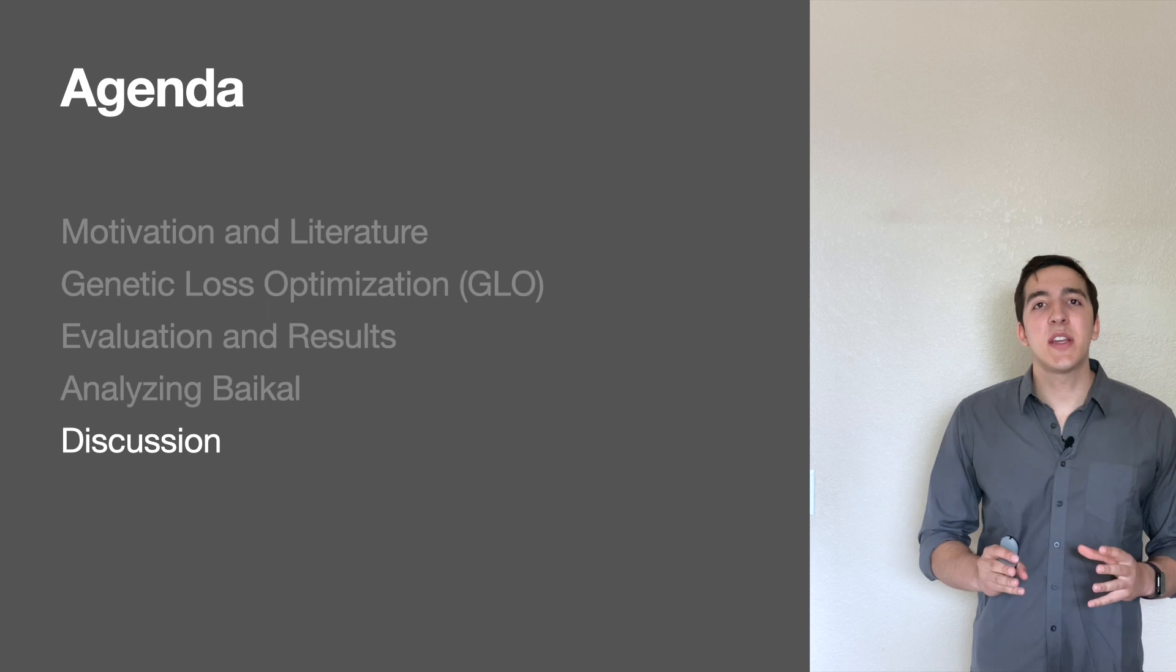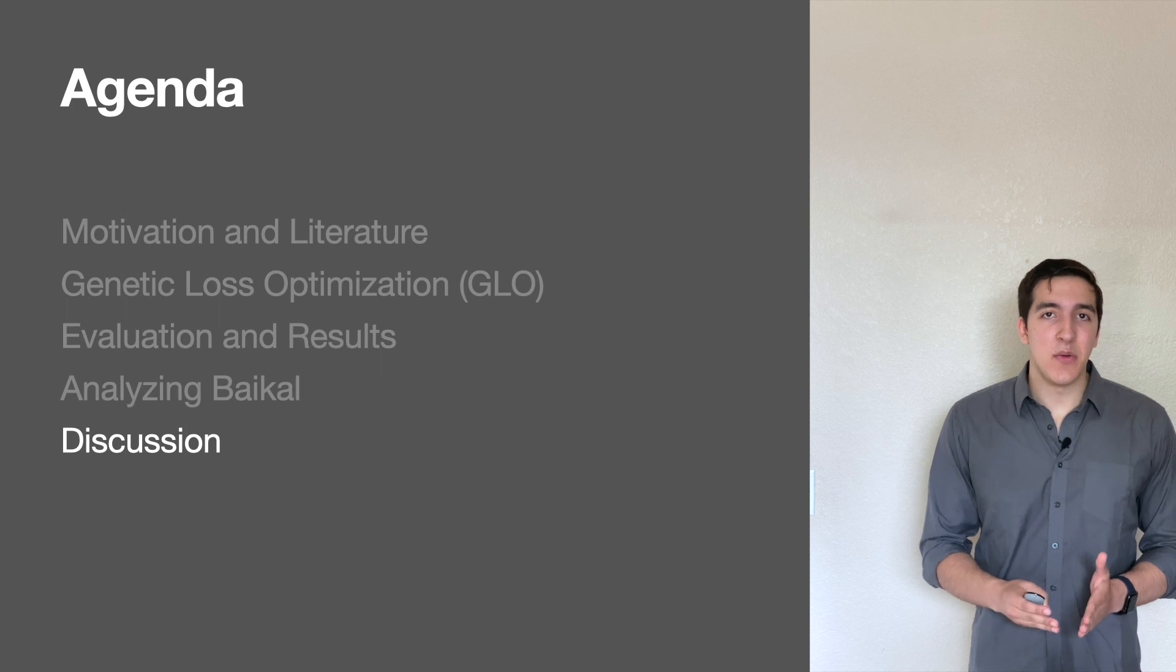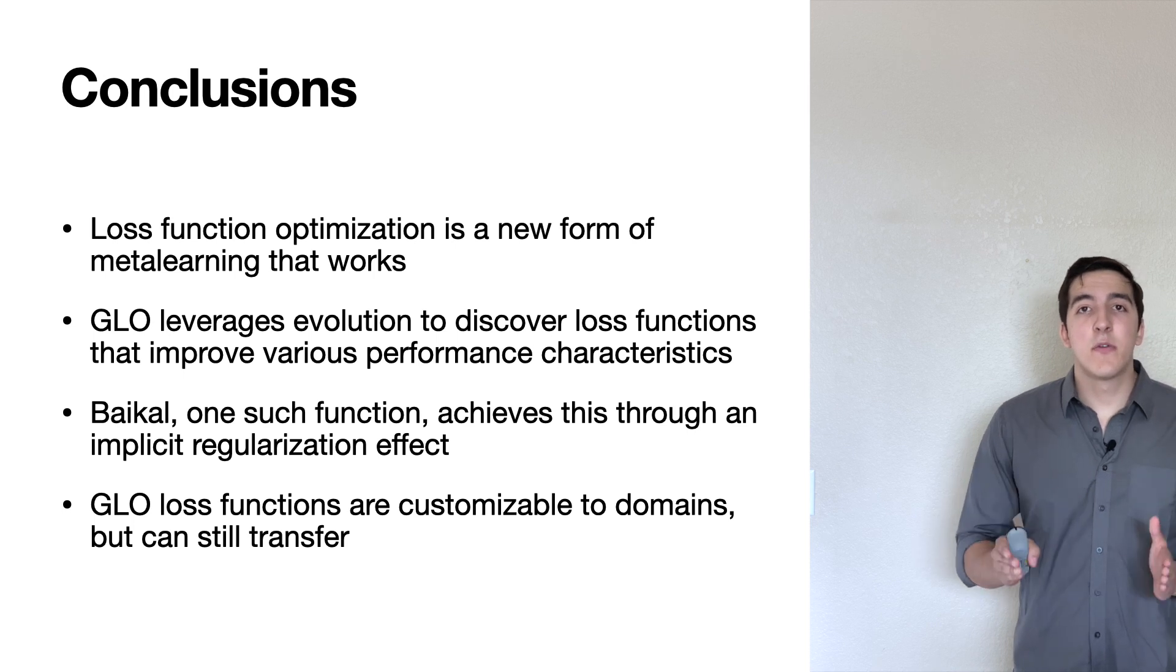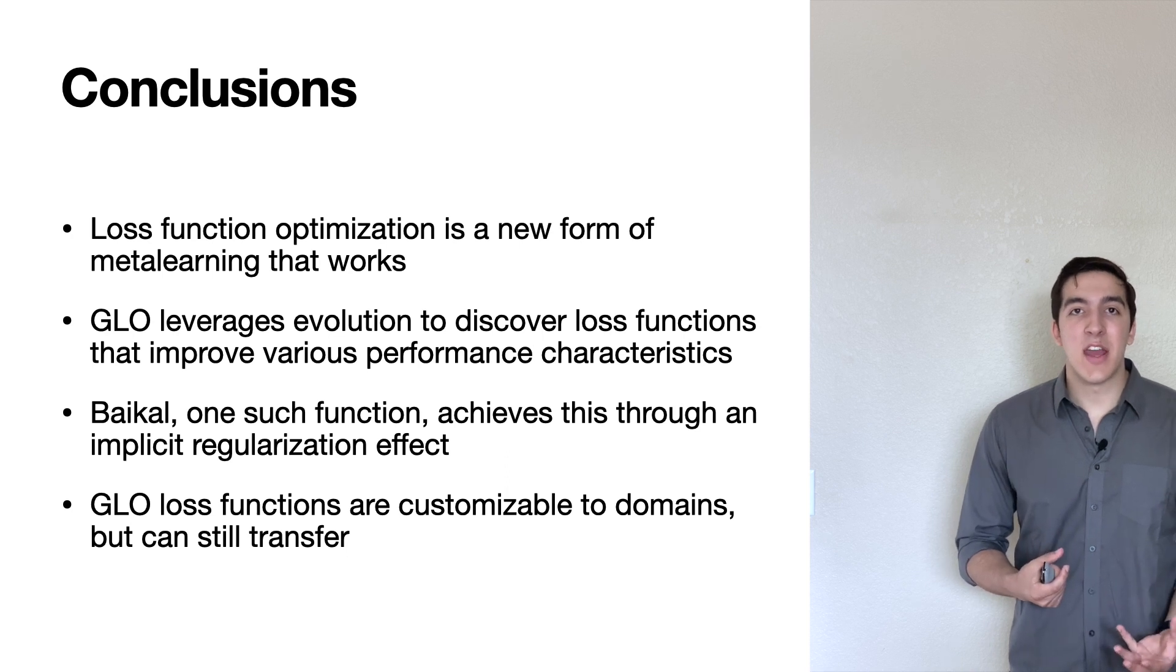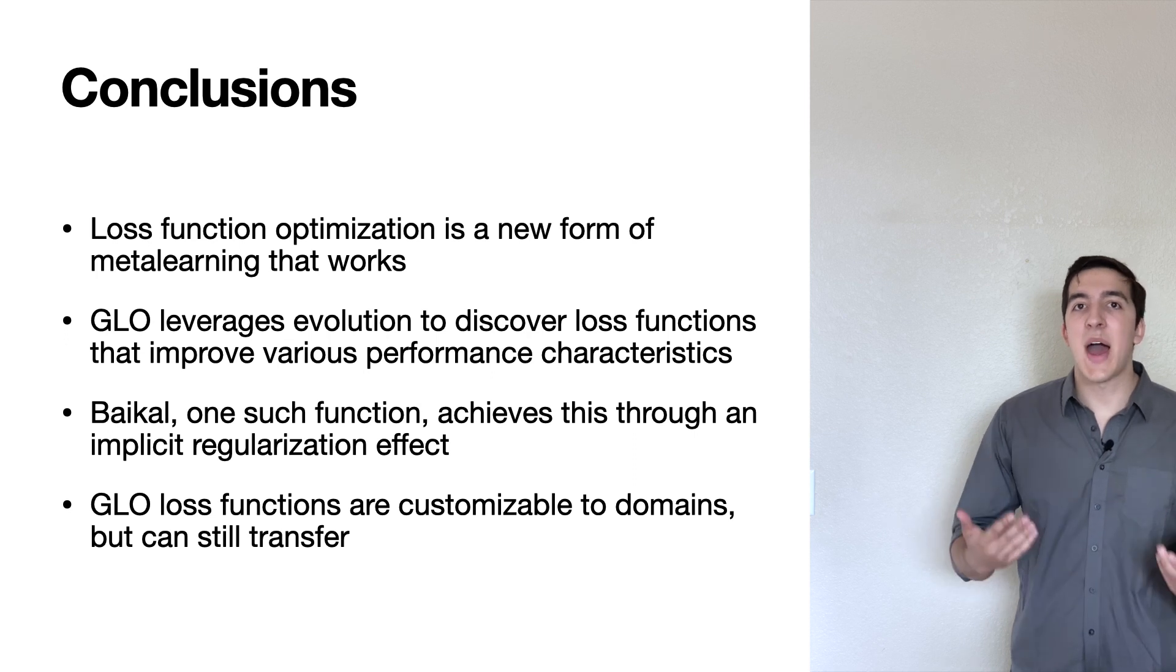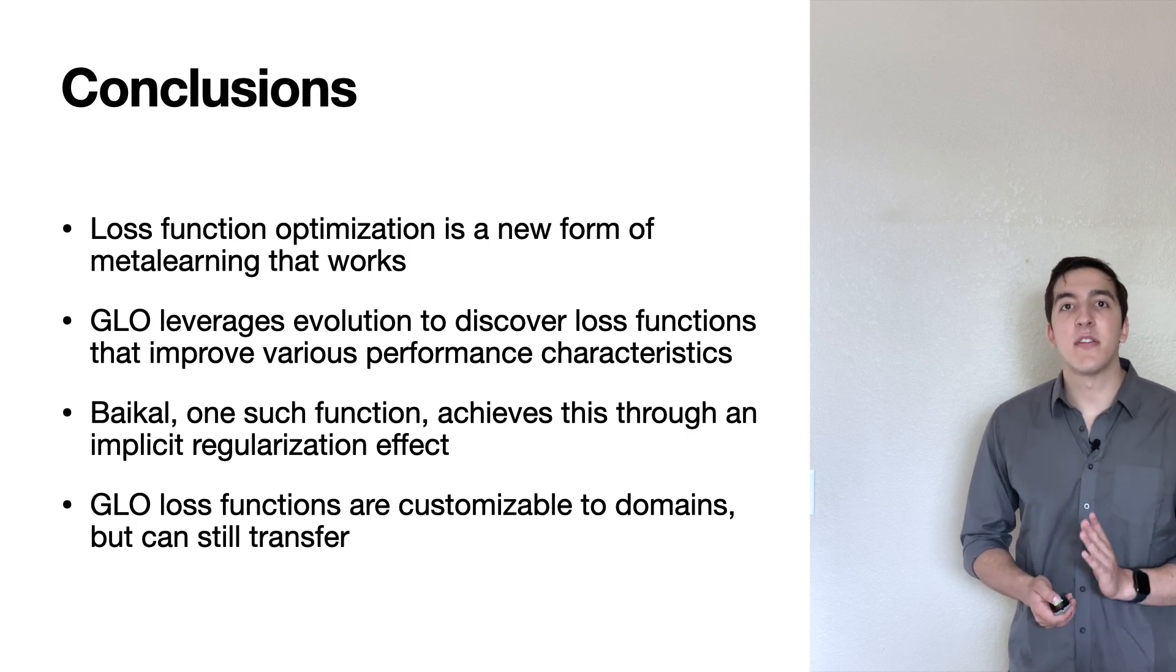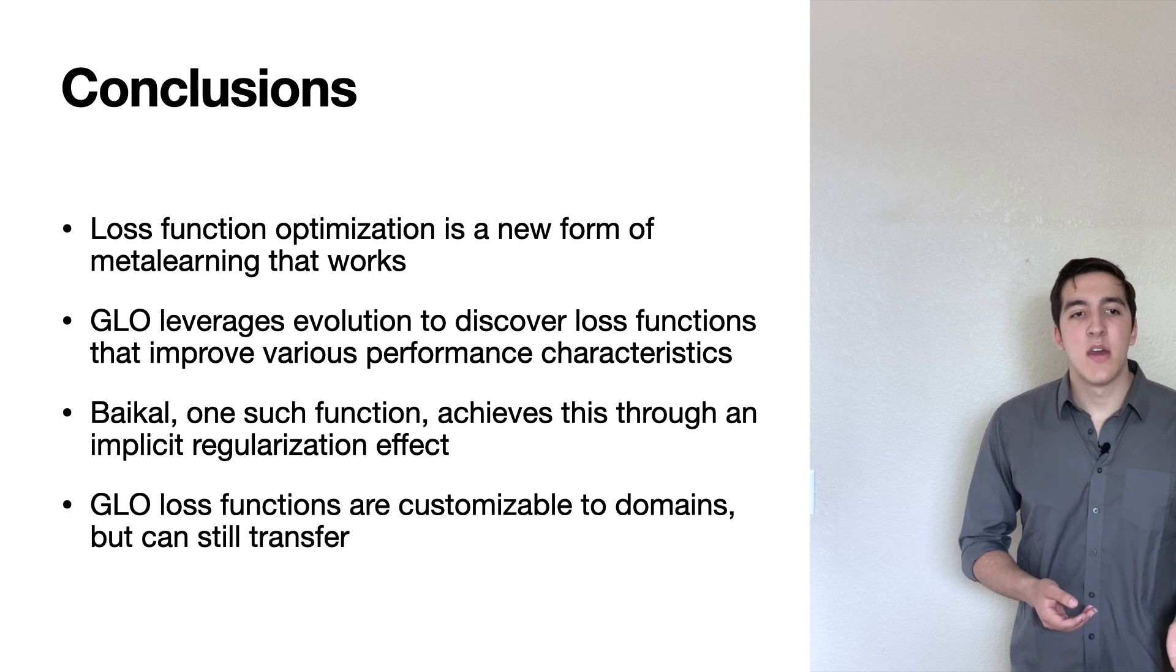Now, we've gone over the glow technique, some pretty compelling results, and some analysis into why these loss functions work the way they do. Now let's wrap things up with a bit of discussion. Loss function optimization is a new form of meta-learning, and it works. This is an entirely new avenue of meta-learning, and we're really excited to see how this is going to develop in the future. Glow leverages evolution to discover loss functions that improve various performance characteristics of a network, from accuracy to data utilization. One such function, Baikal, was discovered on Mnist, and achieves this through an implicit regularization effect that it discovered on its own. Glow loss functions are also customizable to different domains, but can still transfer. So you don't have a one-size-fits-all loss function. You can have custom-tailored functions.